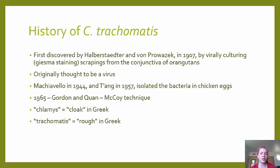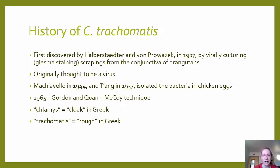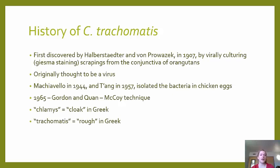The history of Chlamydia is interesting: it was discovered in 1907 by Halberstaedter and von Prowazek by virally culturing and Giemsa-staining scrapings from the conjunctiva of orangutans, which is why it was thought to be a virus for 30 to 40 years. Machiavelo in 1944 and Tang in 1957 isolated the bacteria in chicken eggs. In 1965, Gordon and Kwan cultured it using the McCoy technique, confirming it was a bacteria. Its name comes from Greek: 'Klamys' means cloak, reflecting its hidden nature, and 'trachomatis' means rough.